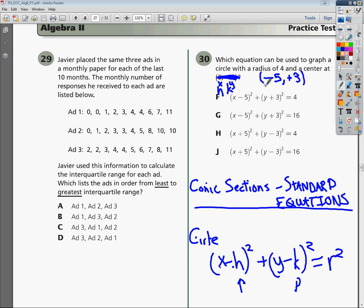So the issue is that the h goes after the x, the k goes after the y, and then I just have to square the radius. The radius is 4, so 4 squared would be 16. So I'm going to go ahead and put 16 for where r squared is.